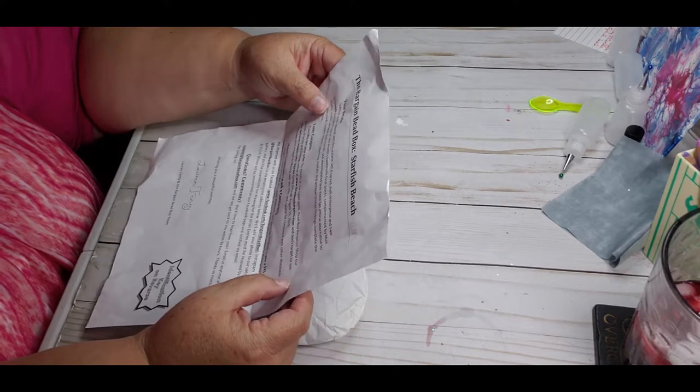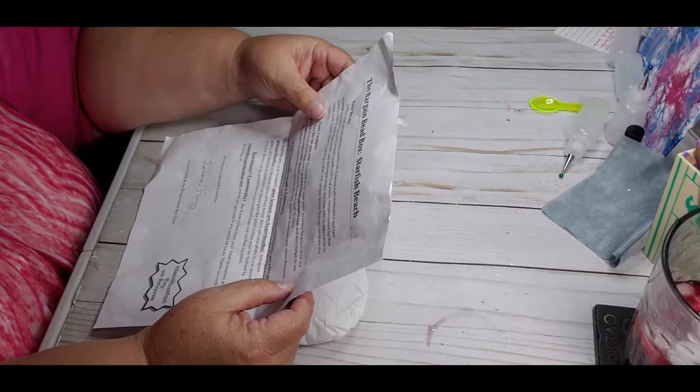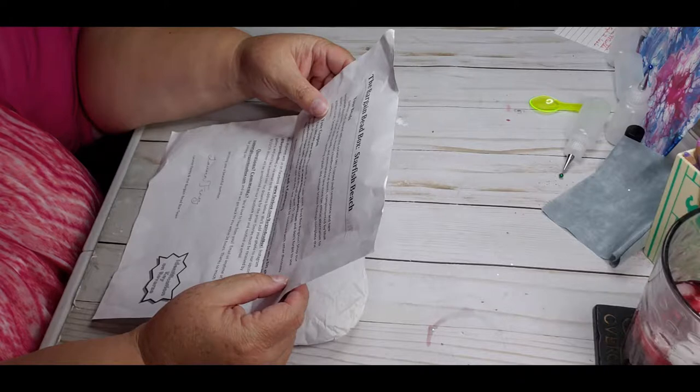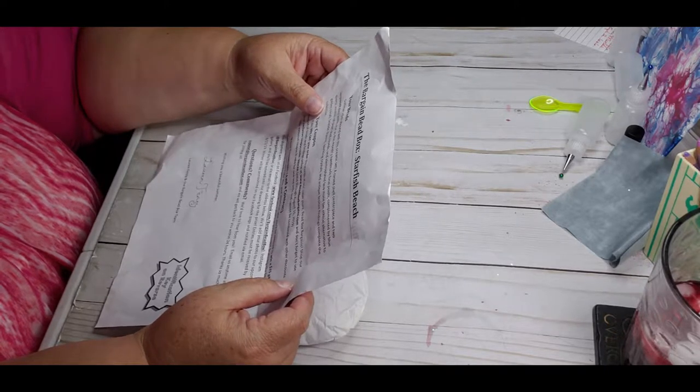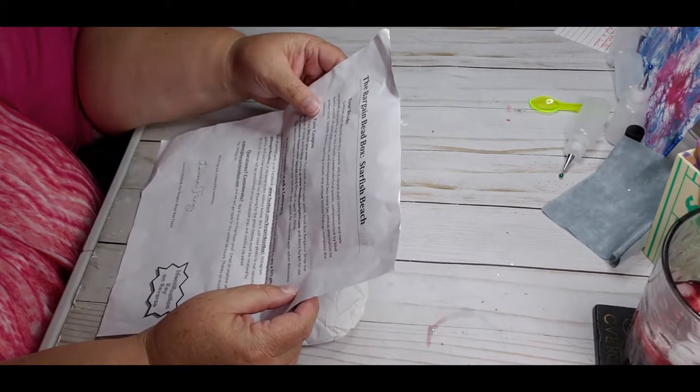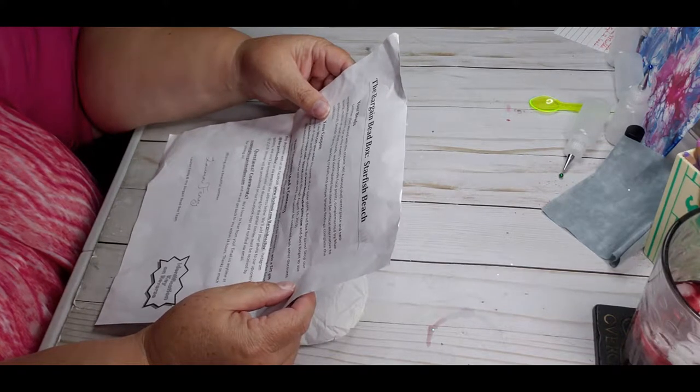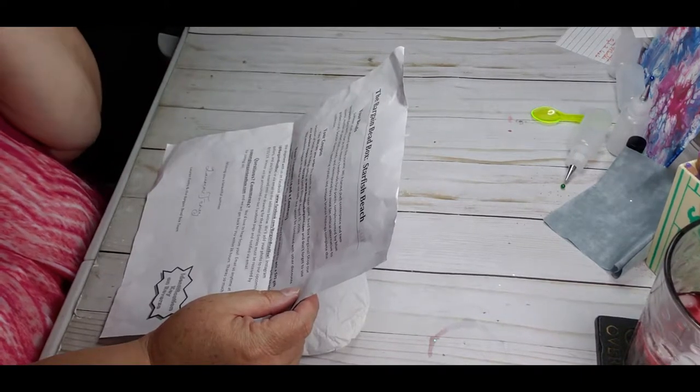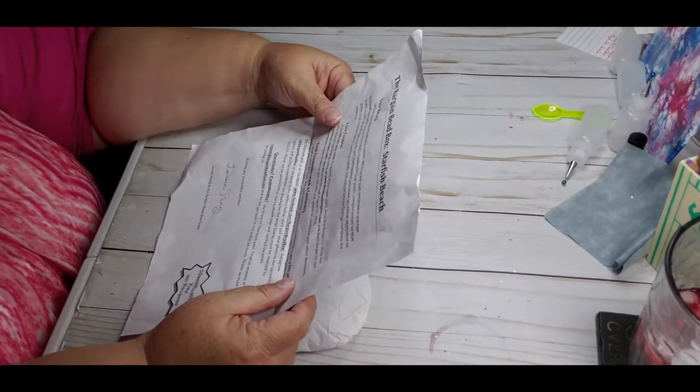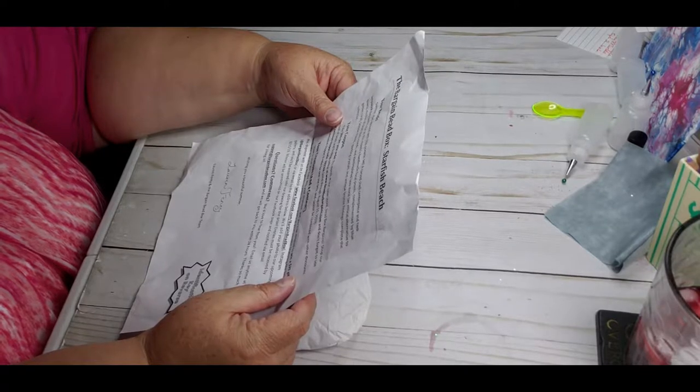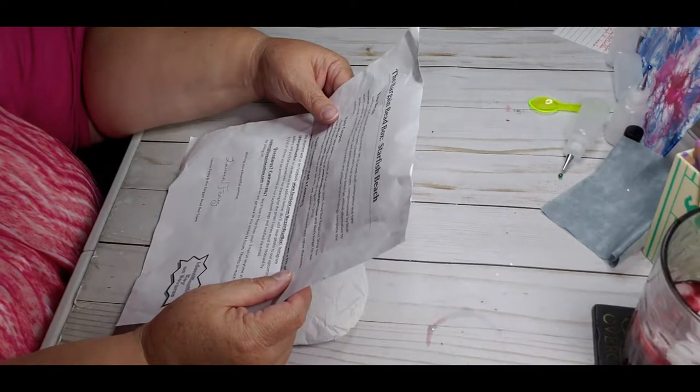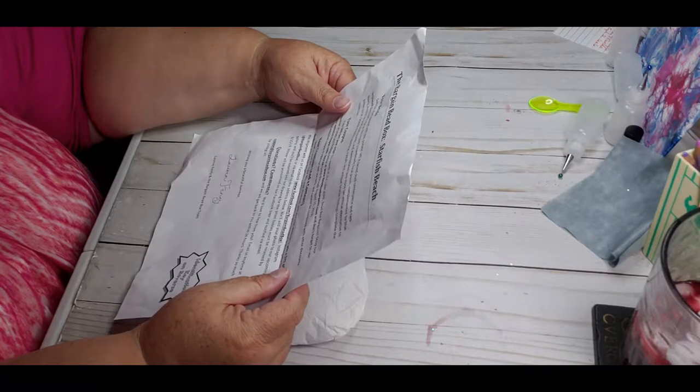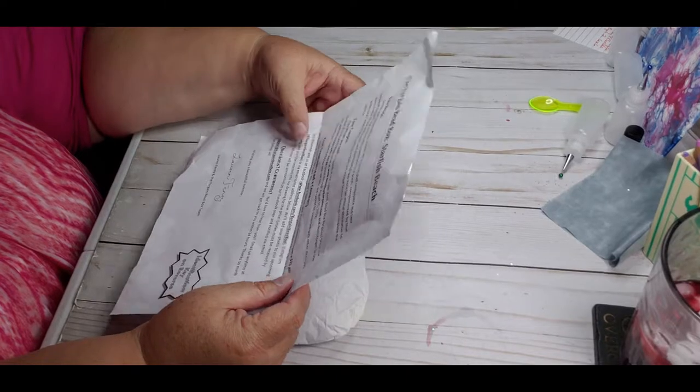Seaside charms, sparkling crystals, and antique bronze findings complete the collection. I can take 30% off bead box bargains. Nice. Alright, let's take a look and see what we got.